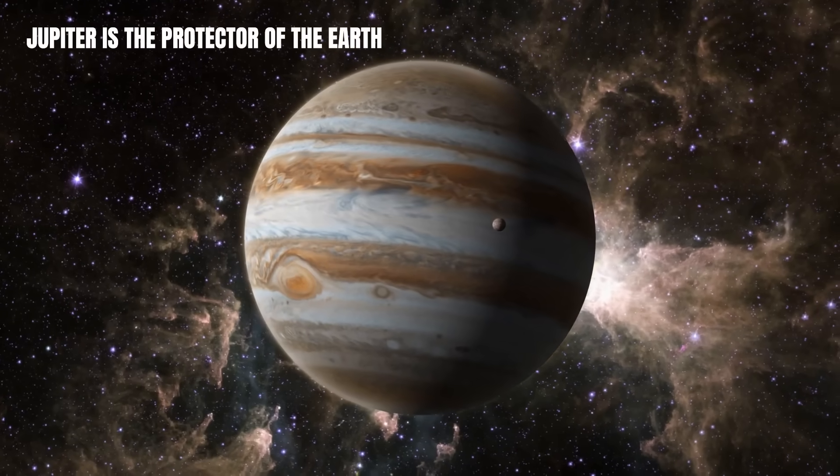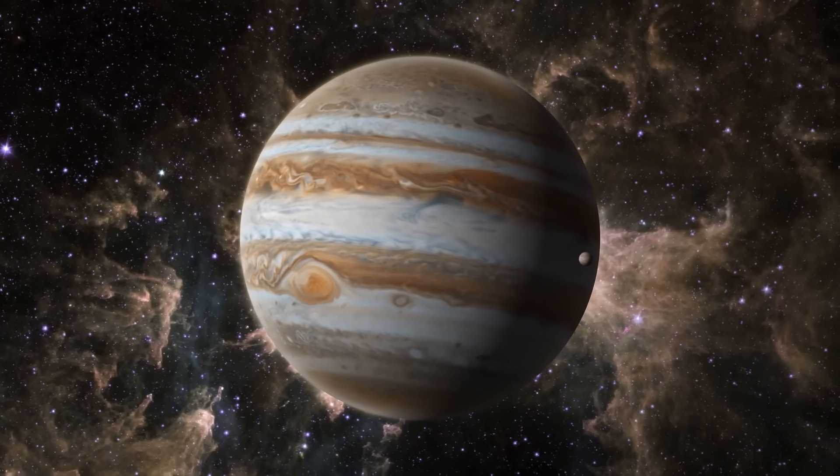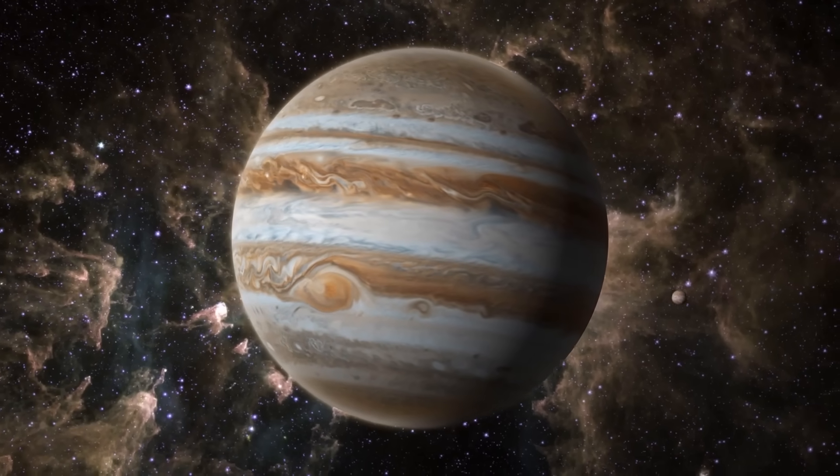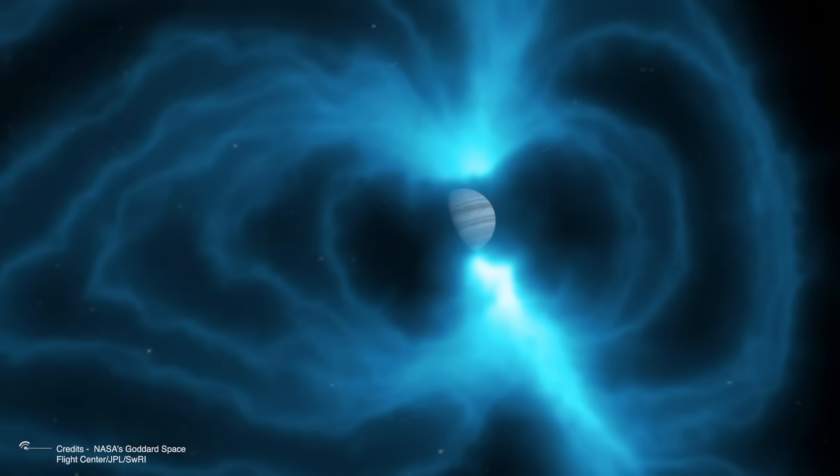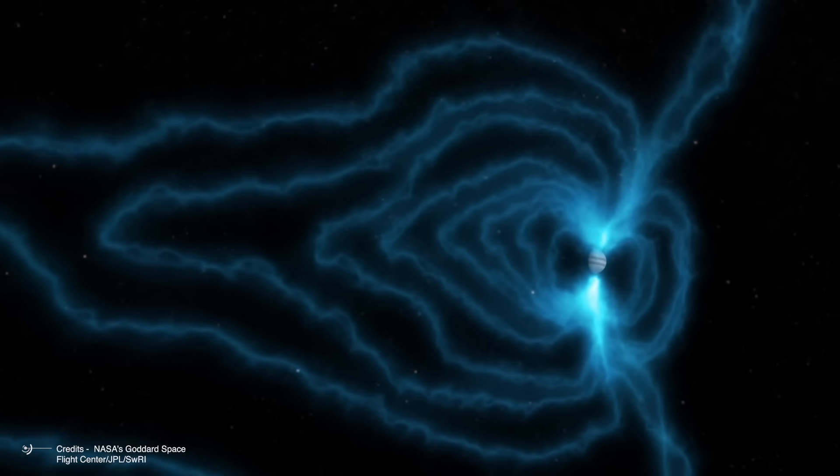Jupiter is the protector of the Earth. The largest planet in the solar system plays a crucial role in deflecting or trapping asteroids and comets that could harm our planet. This fantastic function is due to its powerful gravitational field, the strongest after the Sun.